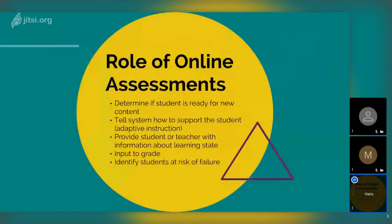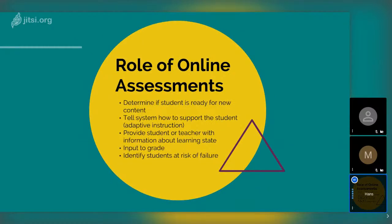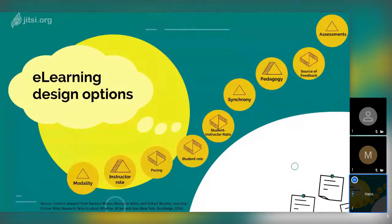Finally, you need to assess if the learning objectives have been achieved. In an online system, you can get feedback from the system if the student is ready for new content — that's content tracking. When somebody finishes something, a new topic opens up or the system tells how to support students with adaptive instructions. It can also provide student or teacher information about the learning state, give input to grades, and identify students with a high risk of failure. So you use it as a dashboard for monitoring student progress.